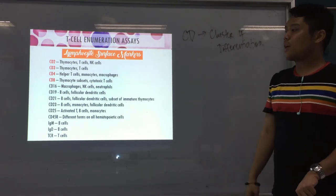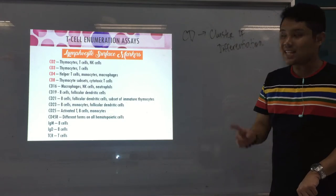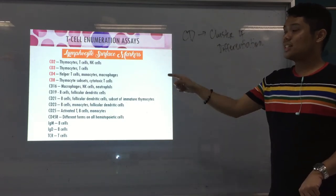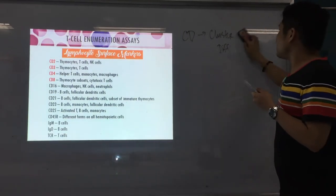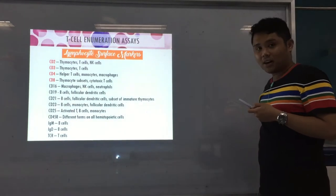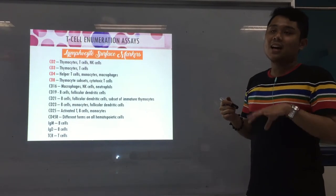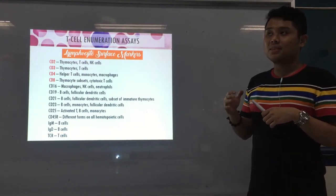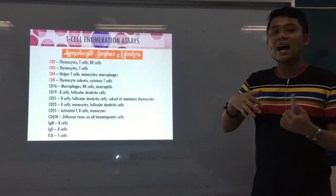Please take note of the CD markers usually found in T-cells: CD2, CD3, CD4, and CD8. CD4 is your helper T-cells — these are the T-cells that signal the other cells in your immune system that a pathogen is present.